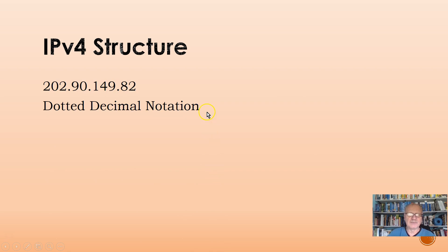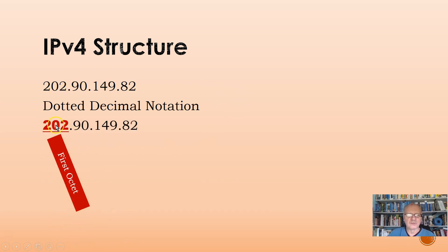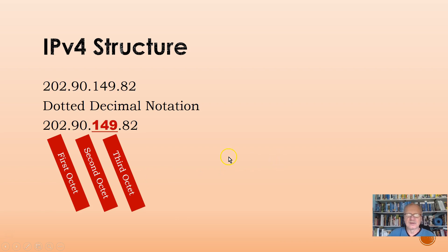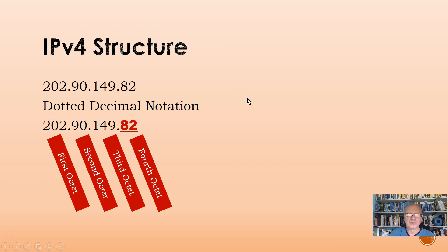We have a name for that — we call it dotted decimal notation, because it's in decimal, not in binary, and because we have the dots to separate the four sections. We also have names for each of these four sections — we call these octets. So the first one, 202, is the first octet. Then 90 would be the second octet. 149 would be the third octet. And finally, 82 would be the fourth octet. That's the basic IP version 4 structure.